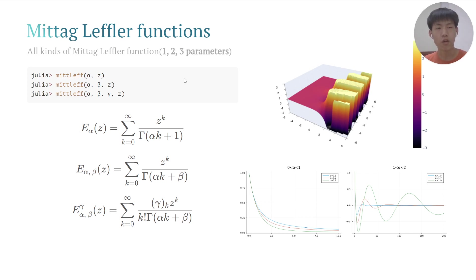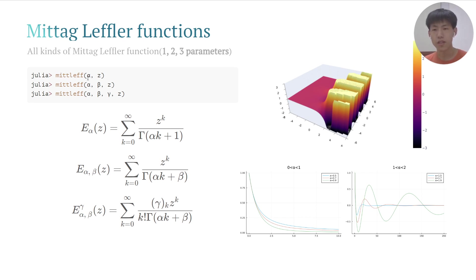FractionalDiffeq.jl also has built-in support for Mittag-Leffler functions with 1, 2, and 3 parameters. We just need to input different parameters — 1, 2, or 3. Here is the different-order plot.